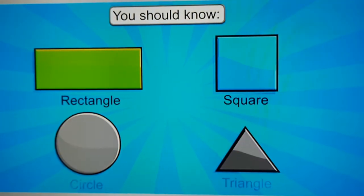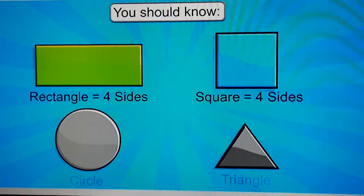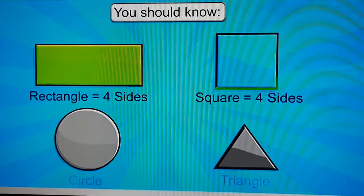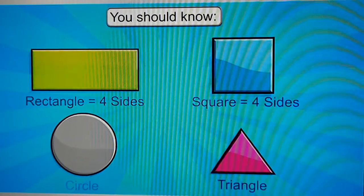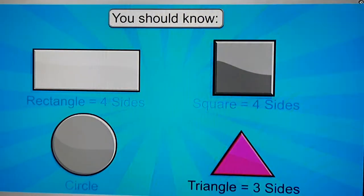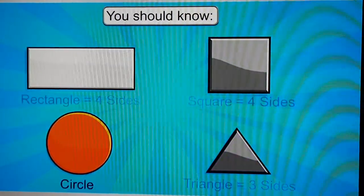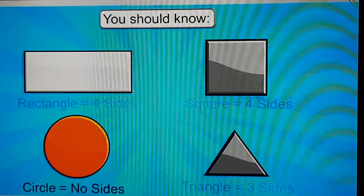A square and a rectangle have four sides. A triangle has three sides. But the circle has no sides.